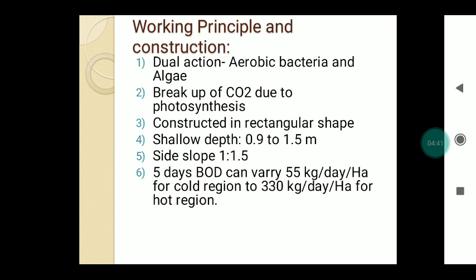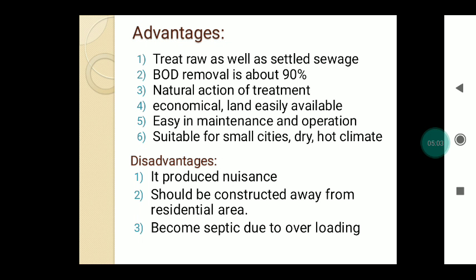The side slope provided is about 1 to 1.5. The 5-day BOD (biochemical oxygen demand) varies from about 55 kg per day per hectare for cold regions up to 330 kg per day per hectare for hot regions. The advantages include: it treats raw as well as settled sewage; BOD removal efficiency is about 90%; natural treatment occurs through bacterial-algae symbiosis via photosynthesis; it is economical and land is easily available; it is easy to maintain and operate; and it is suitable for small cities with dry and hot climates.